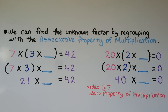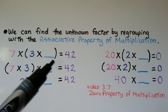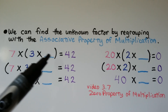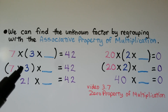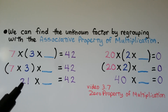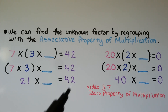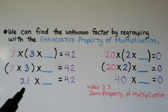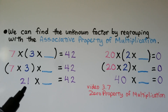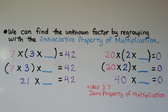We can find an unknown factor by regrouping with the associative property of multiplication. For this one: 7 times 3 times some number equals 42. We regroup and do 7 times 3 first — that equals 21. So 21 times some number equals 42. Since 21 plus 21 equals 42, we have two 21s, so 21 times 2 equals 42.